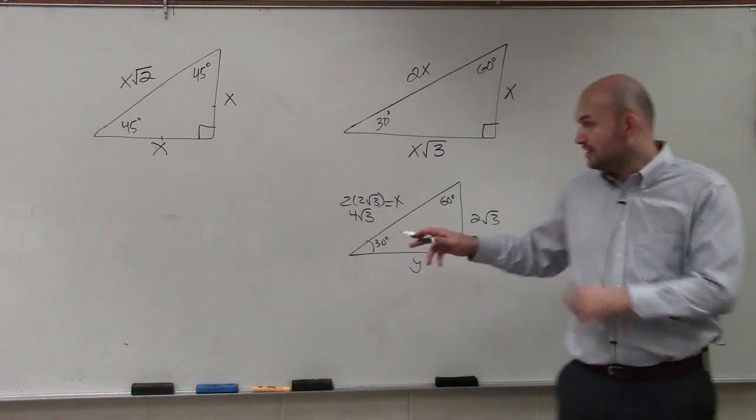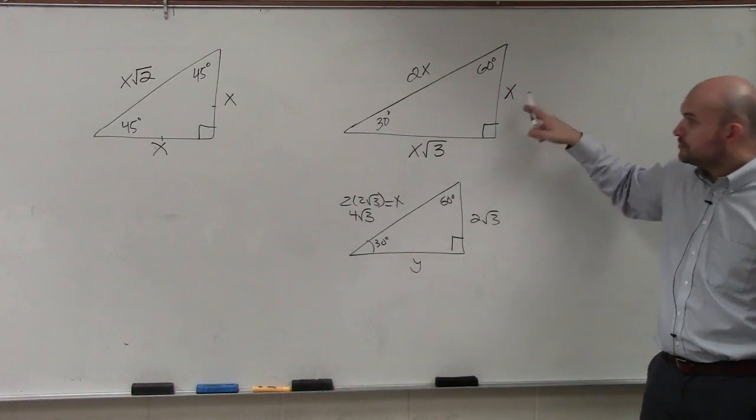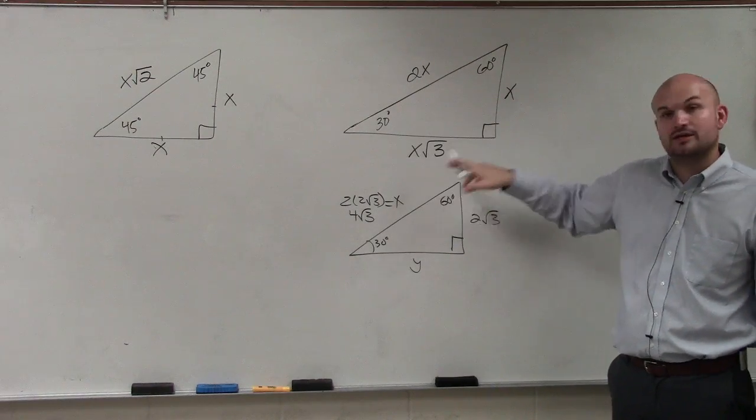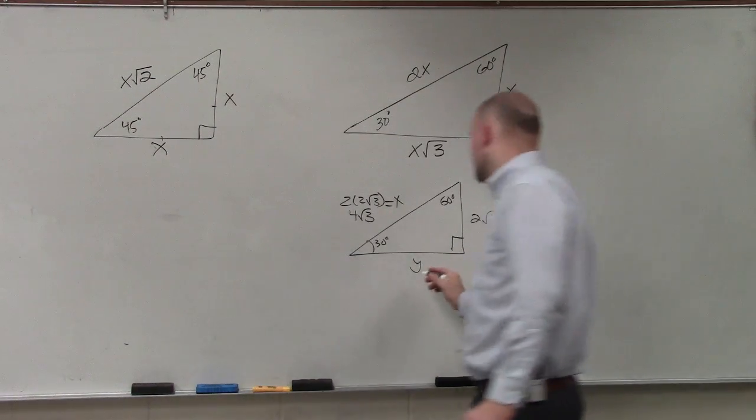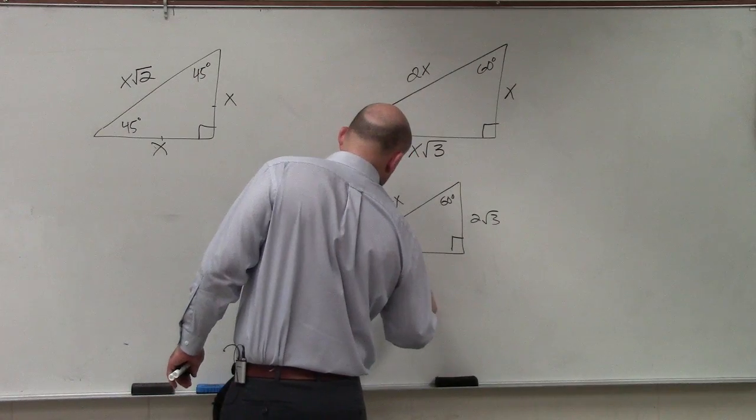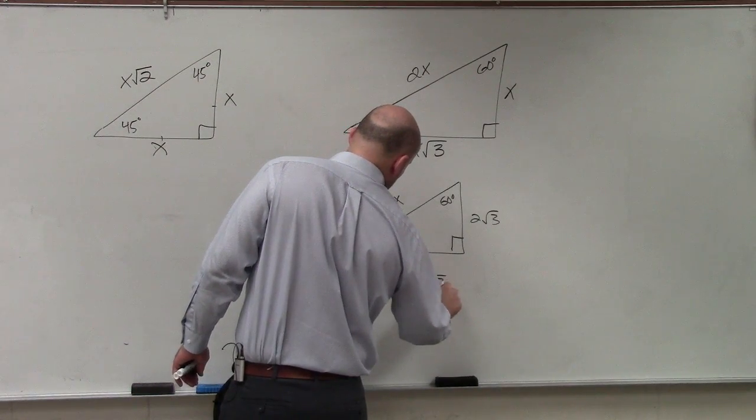To go from the short leg to the long leg, the relationship is whatever the short leg is, to get the long leg, you just multiply by √3. So here, I have 2√3, then multiply by √3.